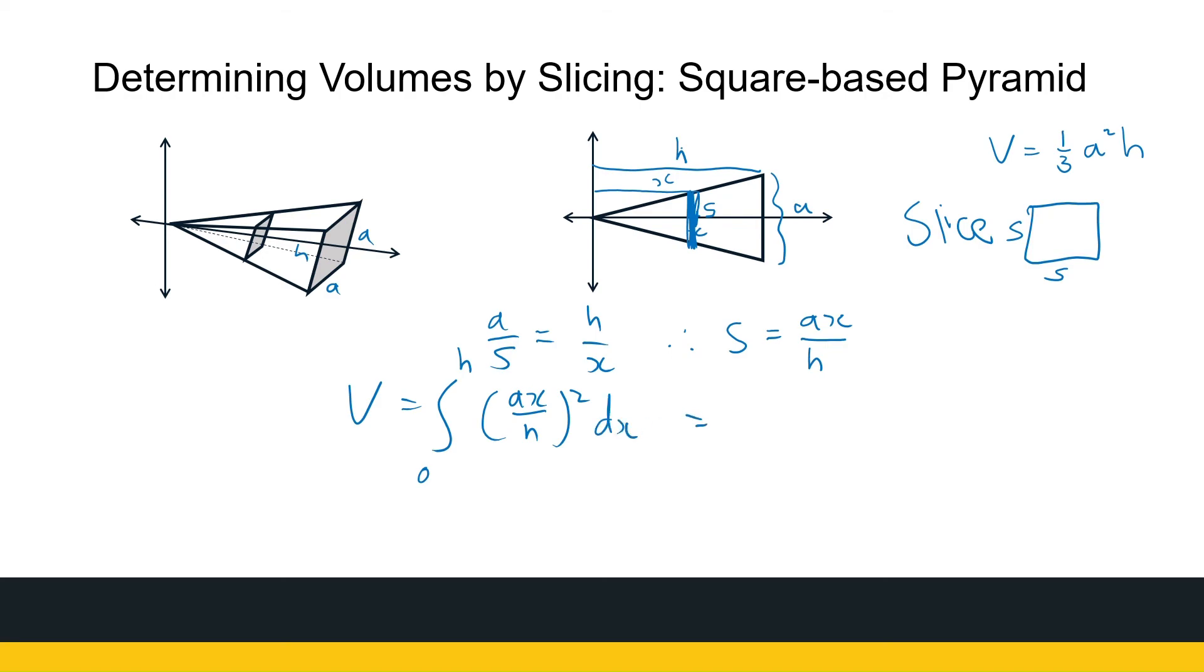Now a is a constant, h is a constant, I can take them out. It's a²/h² the integral from 0 to h of x² dx, which is a²/h² times the antiderivative of x², is (1/3)x³, between h and 0.